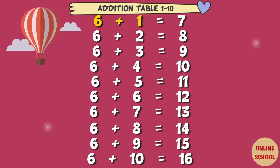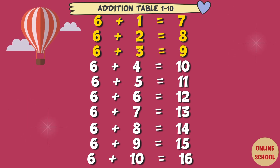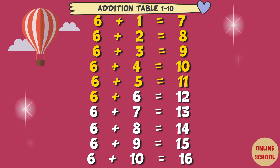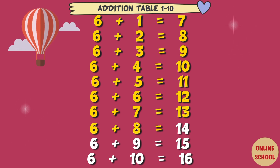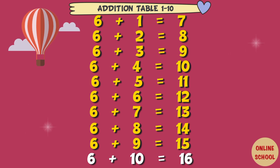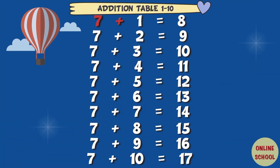Table 6: 6 plus 1 equals 7, 6 plus 2 equals 8, 6 plus 3 equals 9, 6 plus 4 equals 10, 6 plus 5 equals 11, 6 plus 6 equals 12, 6 plus 7 equals 13, 6 plus 8 equals 14, 6 plus 9 equals 15, 6 plus 10 equals 16. Table 7: 7 plus 1 equal 8.